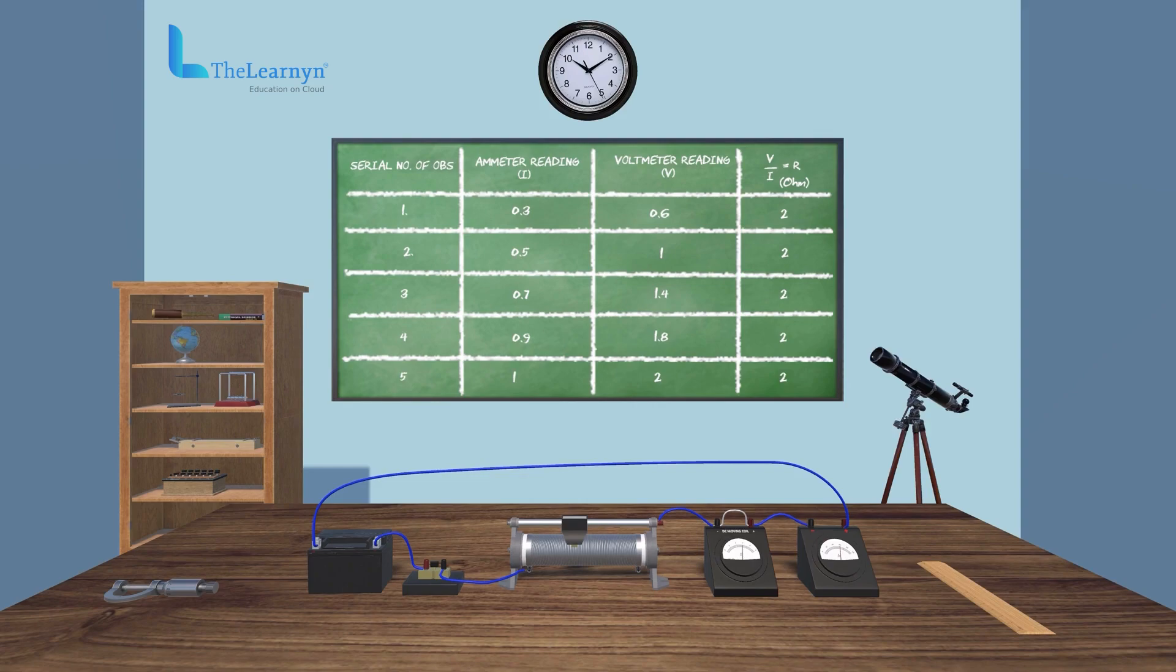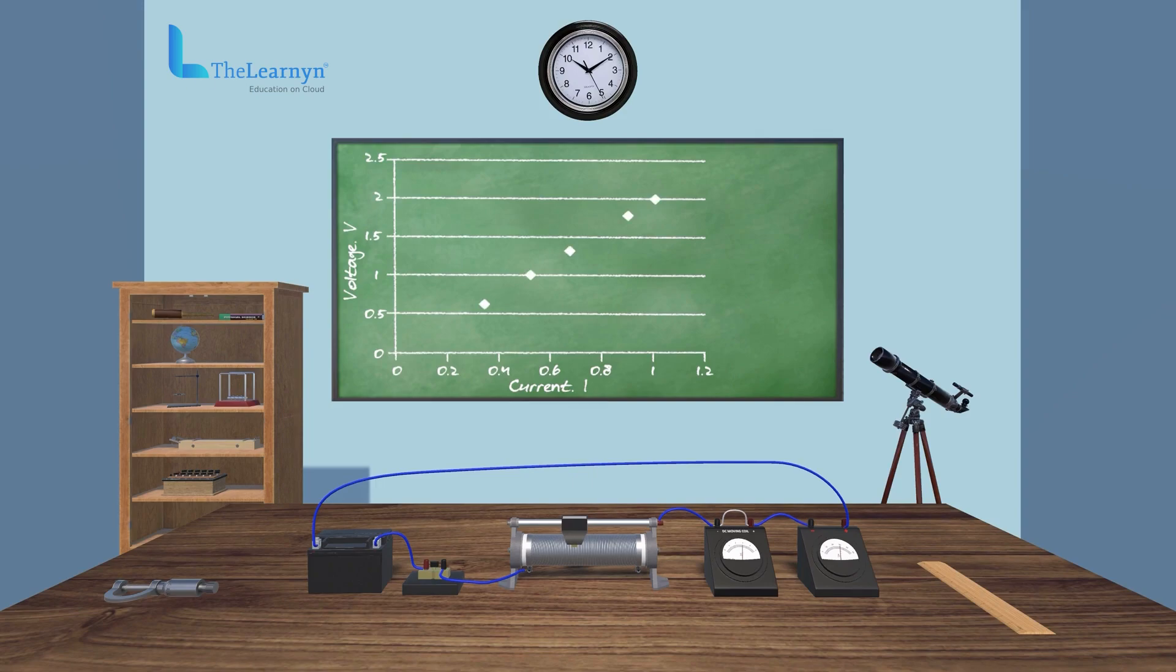Now, we can plot the graph for the values. The resistance per centimeter of wire can be calculated.